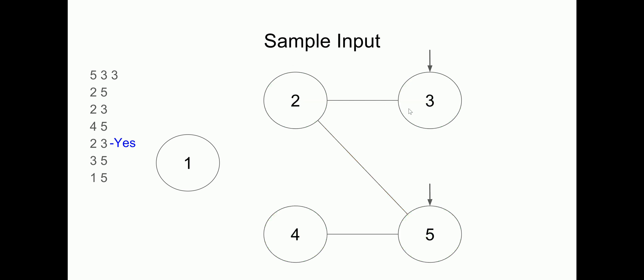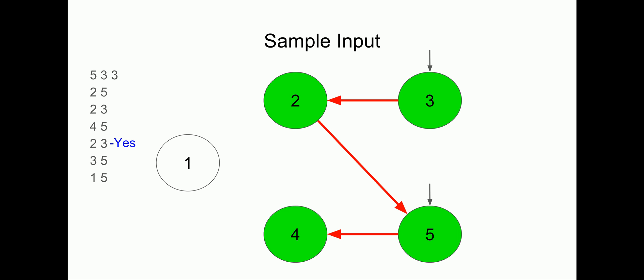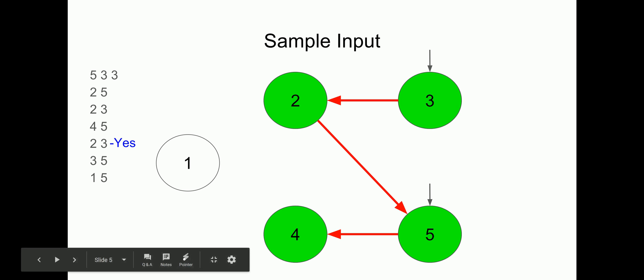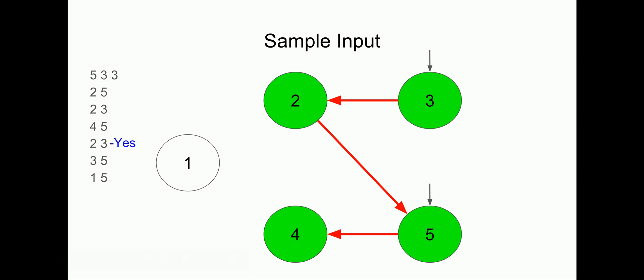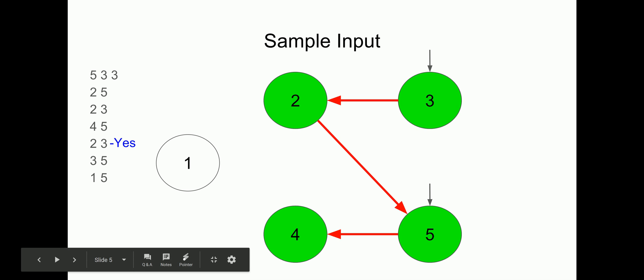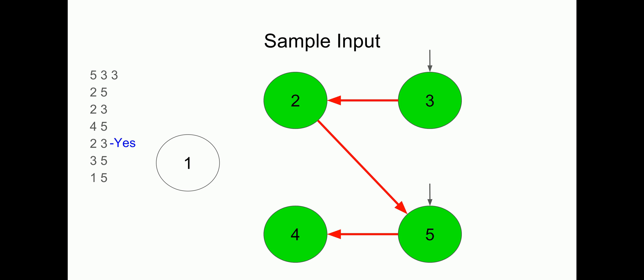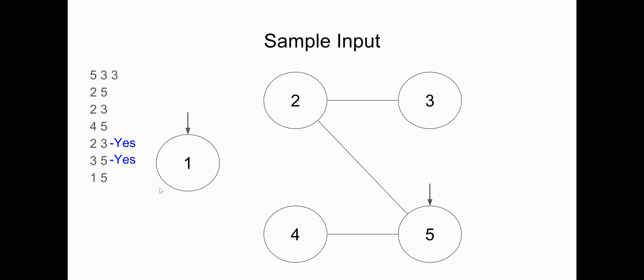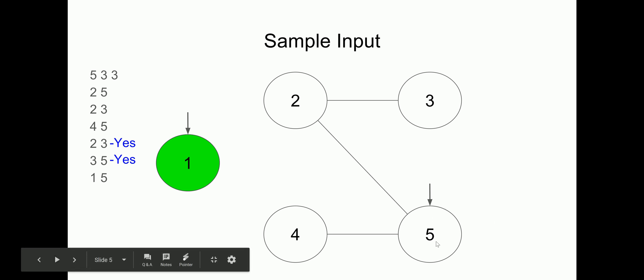So we answer yes for the first query. For the second query — can cow three reach cow five — we start at cow three, which has an edge to cow two, cow two has an edge to cow five, and cow five has an edge to cow four. Cow five is marked as visited, so cow five is connected to cow three — we answer yes. For the last query — cow one to cow five — we start at cow one, mark it as visited, and since there are no edges from cow one, we check if cow five is visited. It is not, so we answer no.